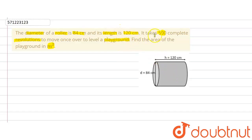For the area of the playground, we will multiply the curved surface area of the roller by 500. First, let us write down what has been given in the question.